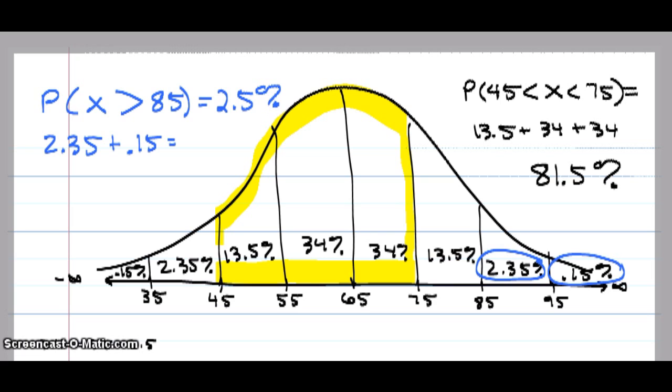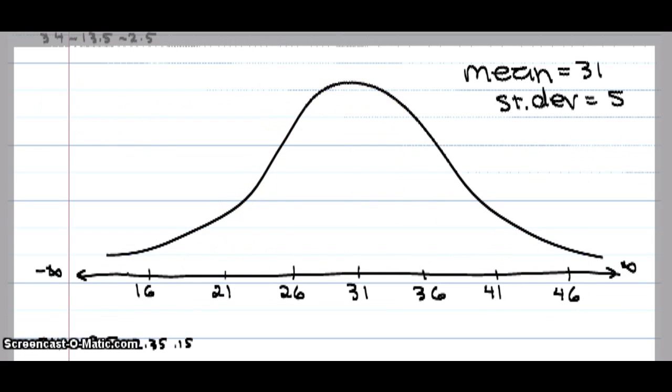Let's try this with a different mean and standard deviation. Maybe we have a mean of 31 and a standard deviation of 5. And we want to know the probability x is less than 21.